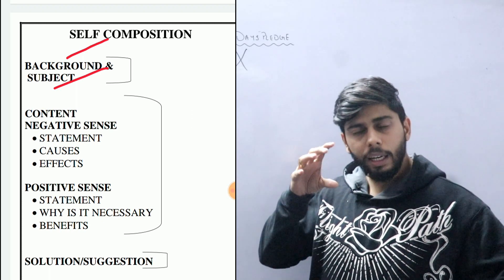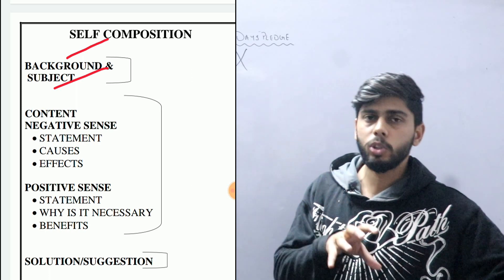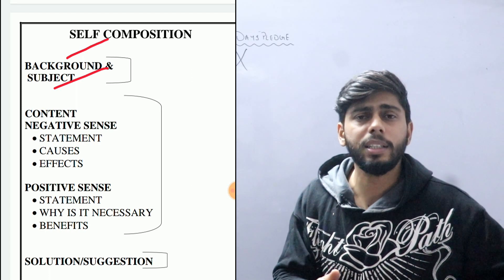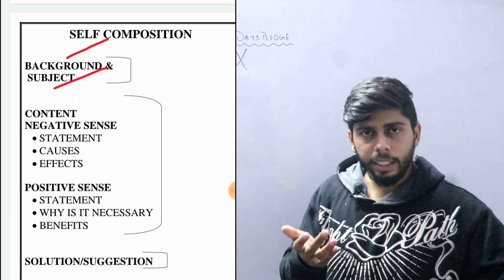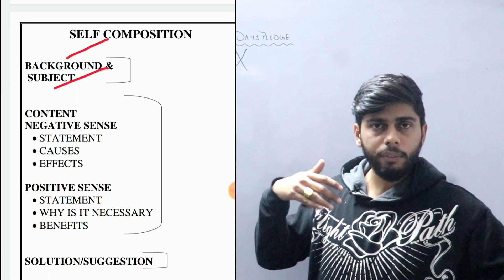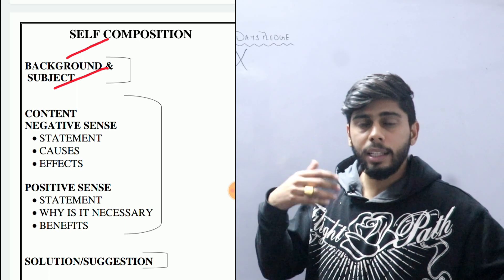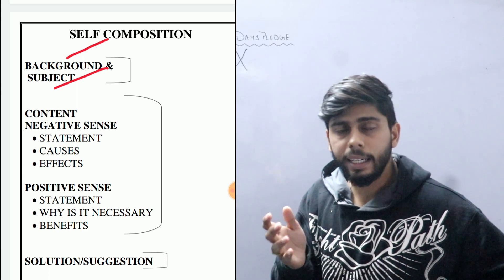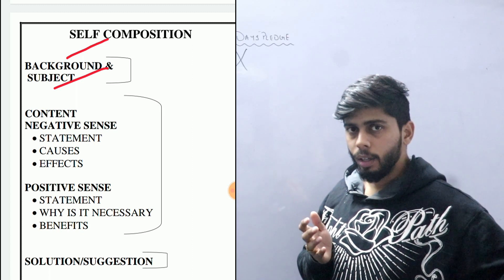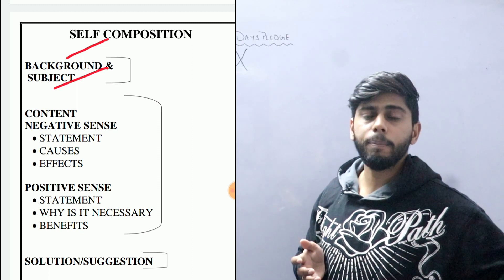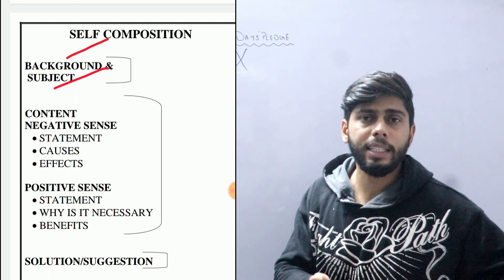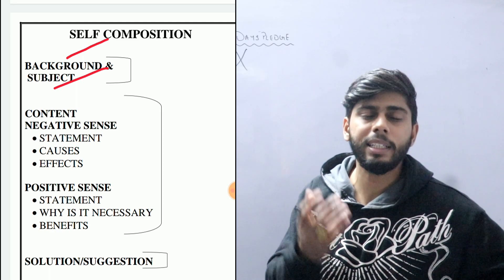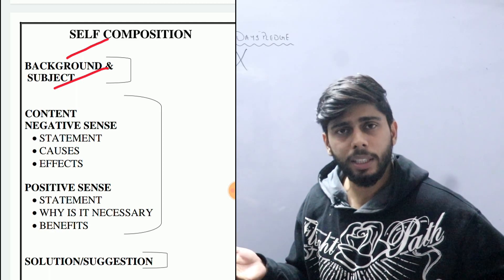For example, if you talk about price rising, then you can talk about the common human and their needs, and then introduce price rising. So this is how you relate the background to the subject of your article. You can give a statement in a negative sense, like how price rising is a big problem affecting the budget of a common man.